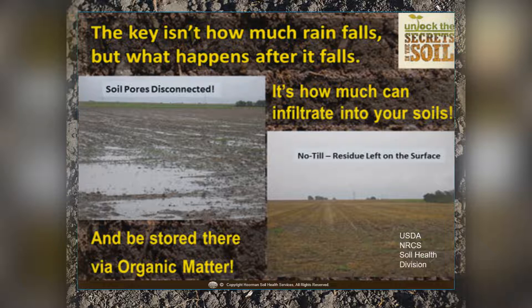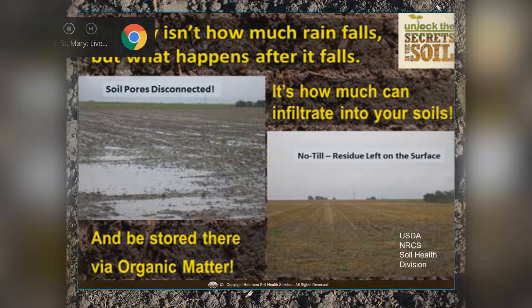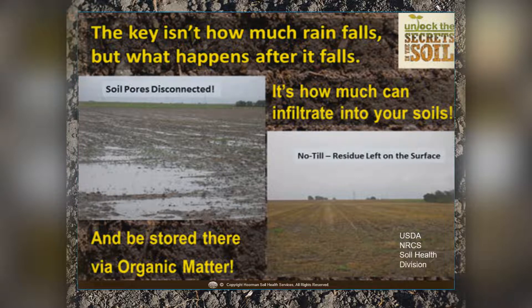In compacted soils, the soil pores are very disconnected. When it rains, the mud starts to coagulate and seals off the soil so water cannot infiltrate. In no-till, the residue left on the surface allows water to infiltrate and keeps those pores open for better water infiltration.